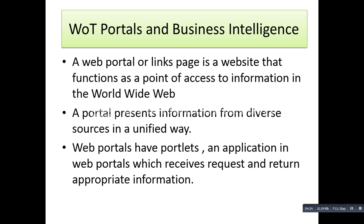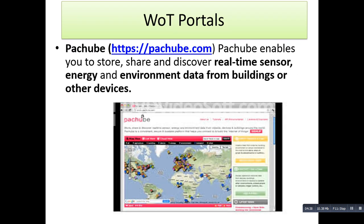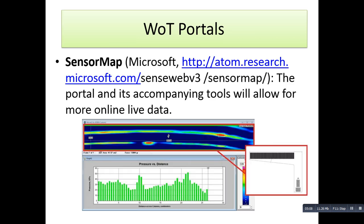Web portals have portlets, which are applications in the web portal that receive a request and return appropriate information. One WoT portal is pachube.com, which enables you to show, share, and discover real-time sensor data and environment data from various buildings and other devices. If you visit pachube.com you can observe what changes are being gathered from various buildings and environmental data.